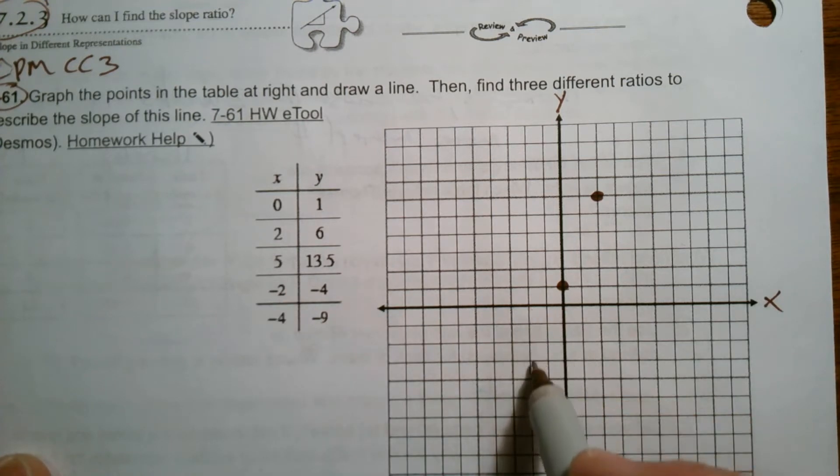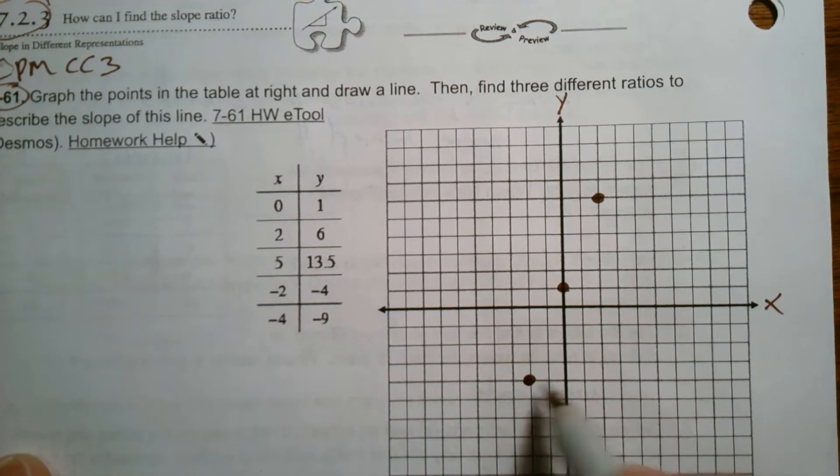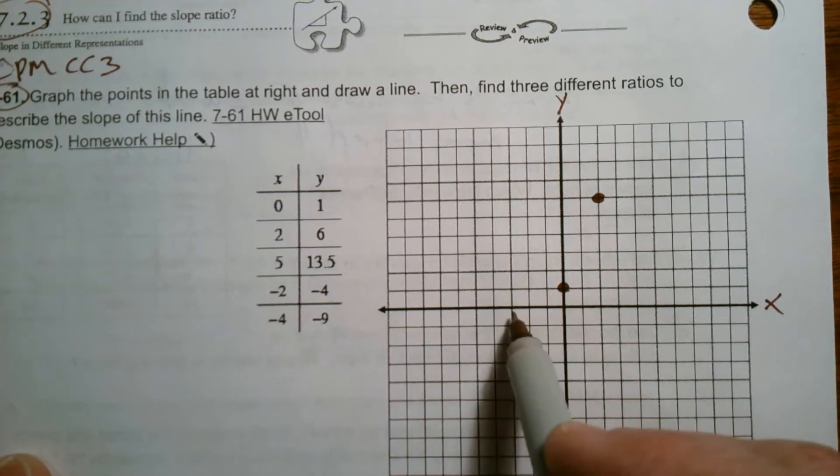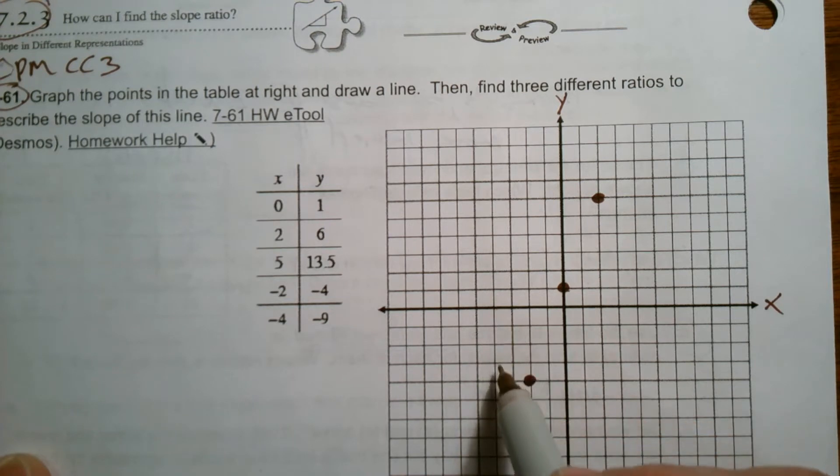Negative two, negative four is right here. Negative four. One, two, three, four, negative nine. One, two, three, four, eight, nine. Okay.